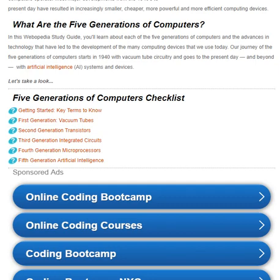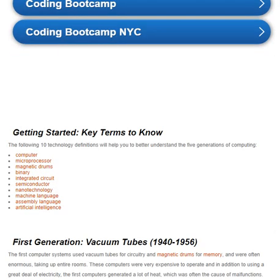In this multimedia study guide, you learn about each of the five generations of computers and the advances in technology that have led to the development of the many computing devices we use today. Our journey through the five generations of computers starts in 1940 with vacuum tube circuitry and goes to the present-day and beyond with artificial intelligence systems and devices.